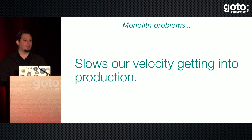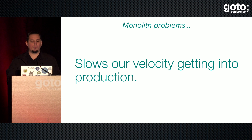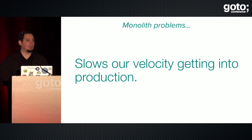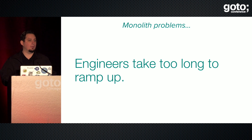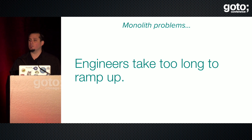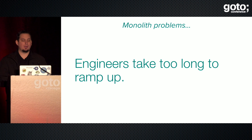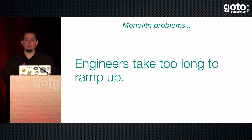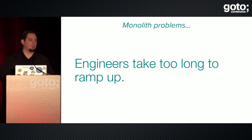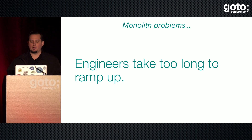First, it's going to slow our velocity getting into production. If we have a bunch of different teams competing to add features in the product, that's really going to slow things down. Also, it takes too long to ramp up engineers — it's not so simple just to add more engineers to go faster. If we have a codebase with a million lines, developers are going to have to spend time ramping up before they can effectively commit changes without introducing defects into production.